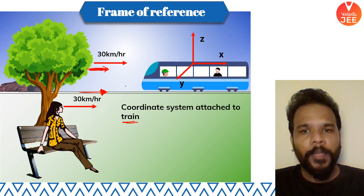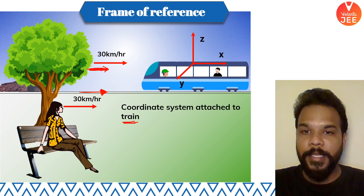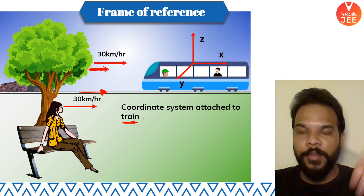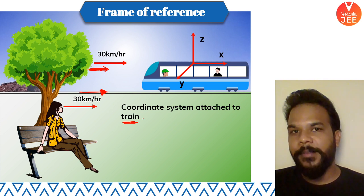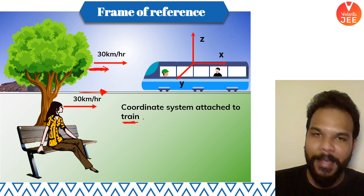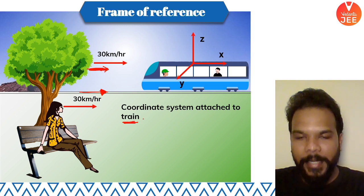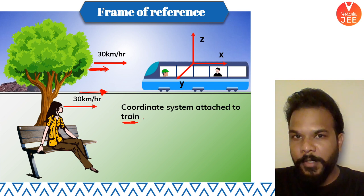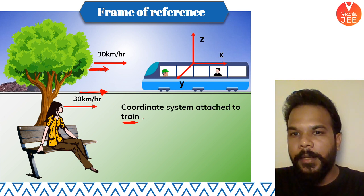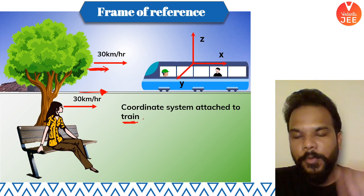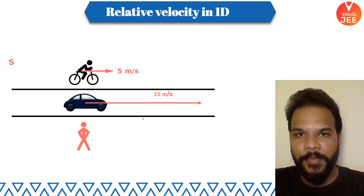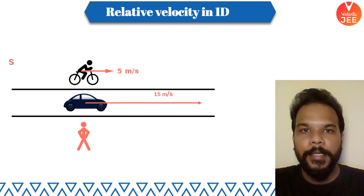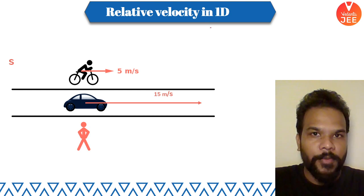Things get interesting when the observer starts moving. When your observer is someone inside the train, that's when the 'illusion' begins. This is exactly what we're going to study now — the concept of relative velocity — with the help of examples.